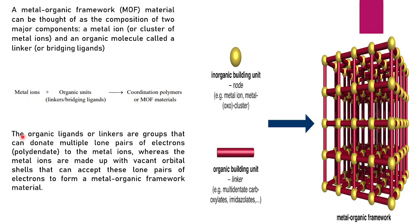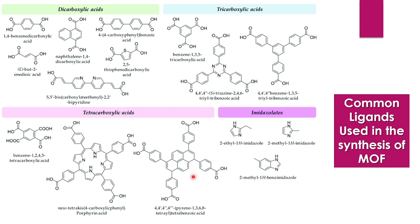The ligand should be polydentate, while the metal is made up of vacant orbital shells that can accept a lone pair of electrons. When selecting a ligand, it is mainly carboxylic acid. The ligand can be a dicarboxylic acid, such as 1,4-benzene dicarboxylic acid, or a tricarboxylic acid such as benzene 1,3,5-tricarboxylic acid — also called trimesic acid.